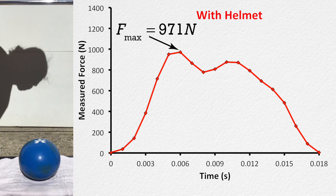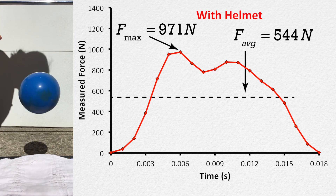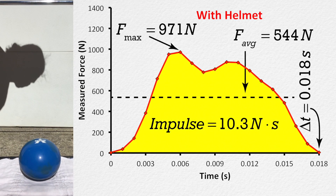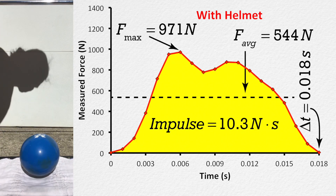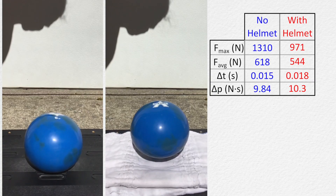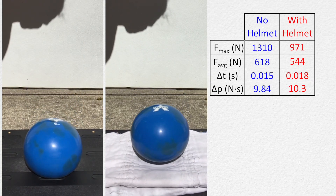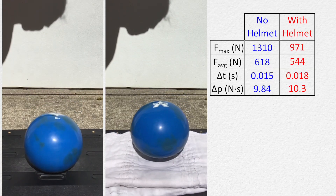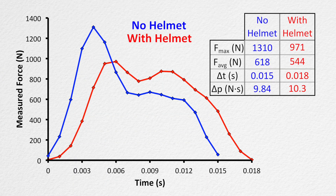The maximum force of impact was 971 newtons. The average force of impact was 544 newtons. The time during the collision is 0.018 seconds, and the impulse, or the area under the curve, is 10.3 newton-seconds. Notice how the change in time during the collision is increased, the average force of impact is decreased, and the maximum force of impact is decreased. However, the impulse was actually slightly increased because of the diaper. If you watch the video closely, you can see that the rebound height with the helmet is actually a little bit higher — meaning the velocity after the collision is a bit larger — which confirms that the impulse was actually increased slightly. The helmet still increased the change in time during the collision and decreased both the maximum force and average force experienced by your head.